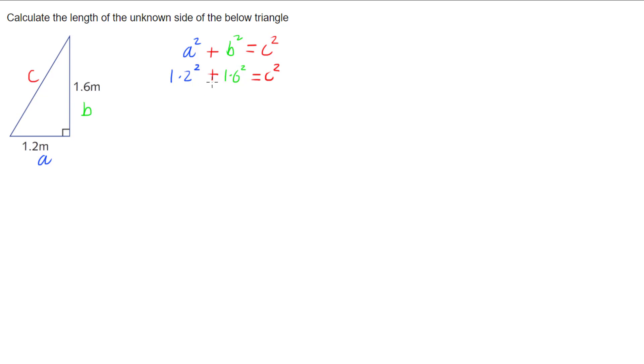Now we can work out the squares. So 1.2 squared, 1.2 squared is the same as 1.2 times 1.2, and that gives us 1.44.